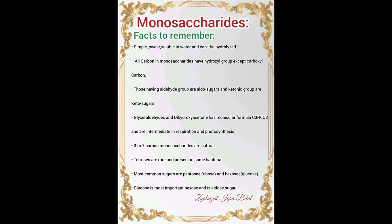Monosaccharides are simple, sweet, soluble in water, and cannot be hydrolyzed further. All carbons in a monosaccharide have hydroxyl groups except the carbonyl carbon, which is the double-bonded oxygen carbon — the functional group of aldehydes and ketones. Those having an aldehyde group are aldo sugars; those with a ketonic group are keto sugars. Glyceraldehyde and dihydroxyacetone share the same molecular formula C3H6O3 and are intermediates in respiration and photosynthesis — this MCQ has already been asked in PPSC exams.